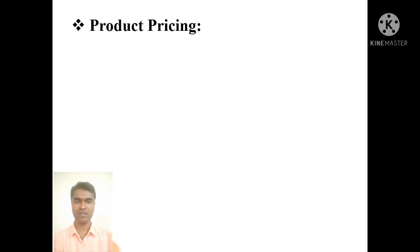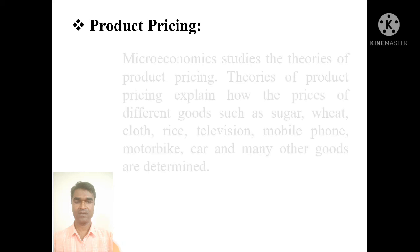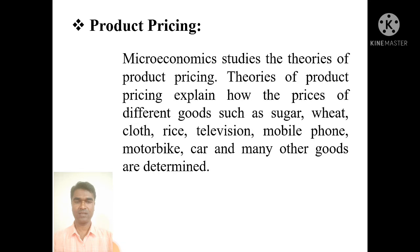Microeconomics generally studies two branches: one is product pricing, and another is factor pricing. Regarding product pricing, microeconomics studies the theories of product pricing. These theories explain how the prices of different goods — such as sugar, wheat, clothes, rice, television, mobile phone, motorbike, car, and many other goods — are determined.